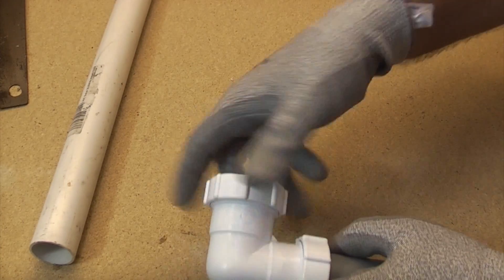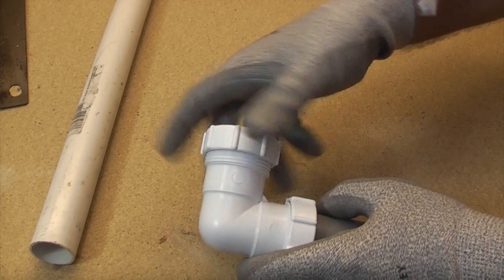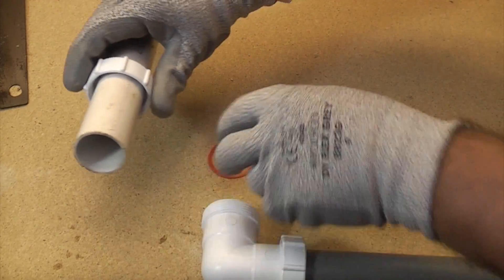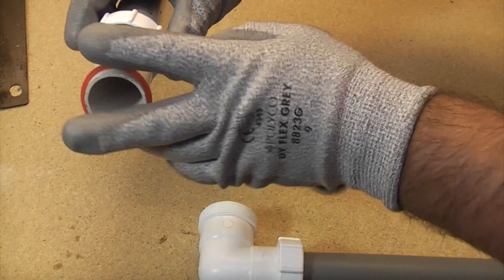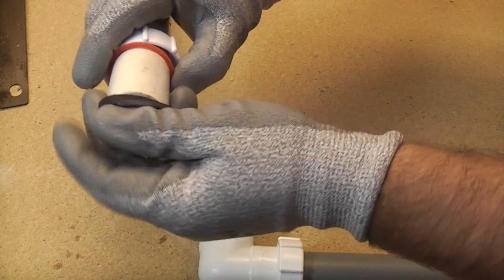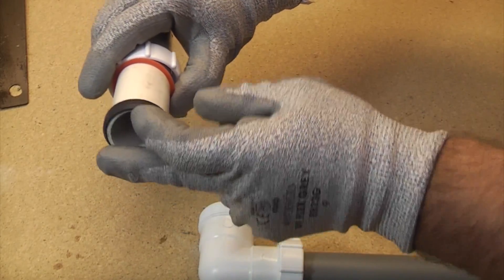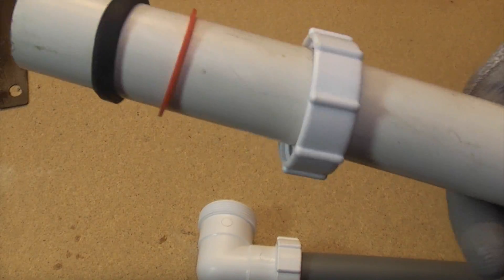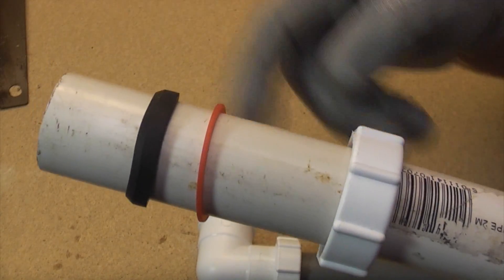So now on the piece of solvent weld, again we'll just undo the nut, take the washer out and the taper washer. We'll put the nut on, and then the plastic washer, and then the taper washer. And again you have to make sure that you get the taper washer the correct way around, so the taper is facing forwards.